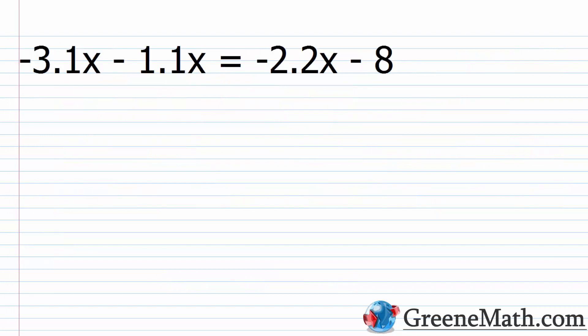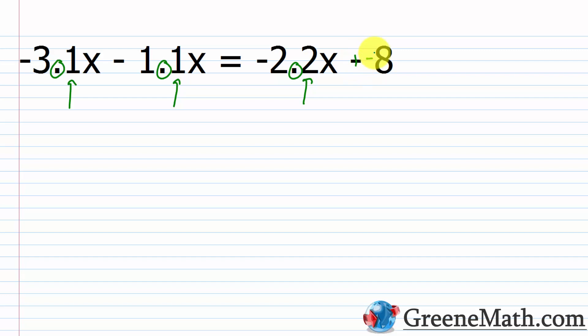Here's an example: negative 3.1x minus 1.1x equals negative 2.2x minus 8. Look at the decimal numbers and find the largest number of decimal places — here all three decimal numbers have one decimal place, and 8 is a whole number. So the largest number of decimal places is 1. Multiply both sides by 10 to move all decimal points one place to the right and eliminate decimals.